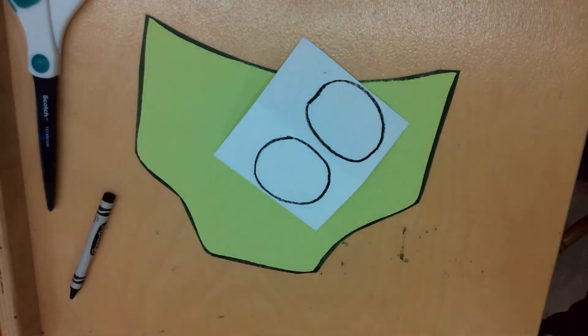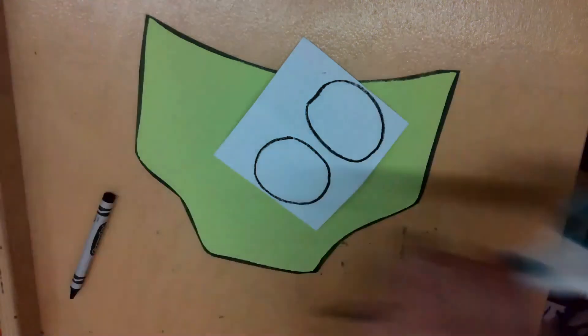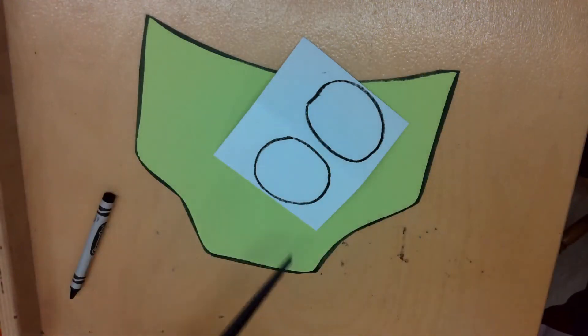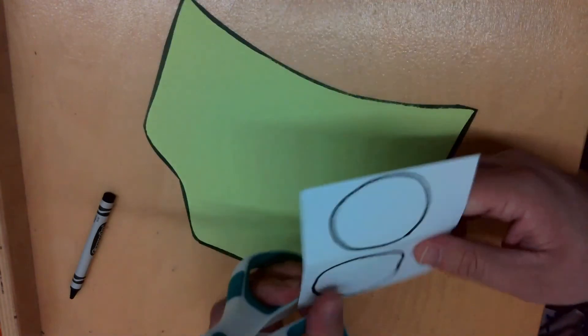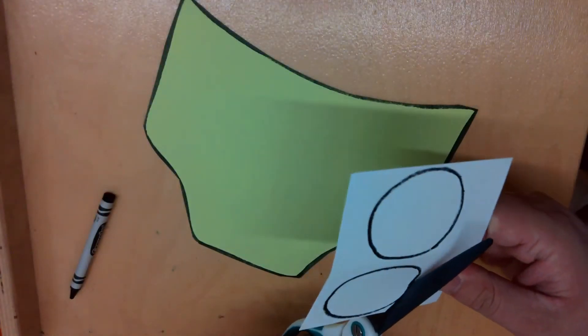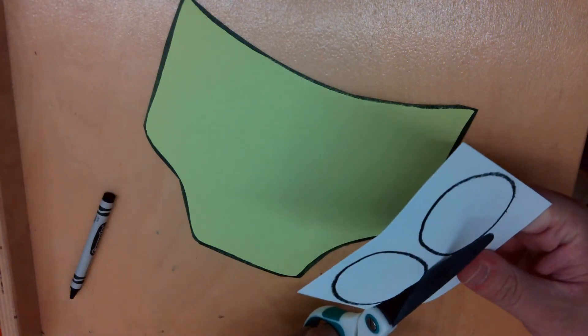After you've drawn your two circles, you're going to take your scissors and you're going to cut out those circles, cutting on the black line. Those are going to be our creepy pair of underwear's eyeballs! Whoa!